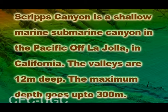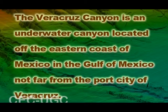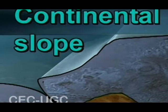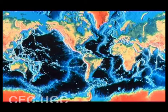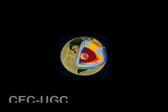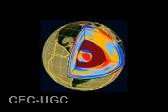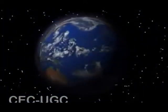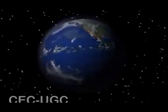Scripps Canyon is a shallow submarine canyon in the Pacific off La Jolla in California, with valleys 12 meters deep and a maximum depth of 300 meters. The Veracruz Canyon is an underwater canyon located off the eastern coast of Mexico in the Gulf of Mexico, not far from the port city of Veracruz. The continental slope is very near to the coastline in almost all surrounding countries of the Pacific. Vast abyssal plains cover about 75 percent of the Pacific Ocean floor, formed by the deposition of fine sediments carried by turbidity currents.